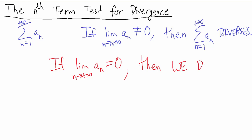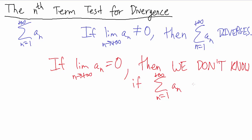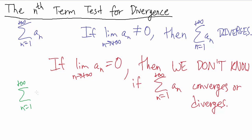Then we don't know if the sum from n equals 1 to positive infinity of a sub n converges or diverges. For some quick examples, let's take a look at the series: the sum from n equals 1 to positive infinity of 1 over n. This is called the harmonic series, and it's a very famous series where the limit of the sequence a sub n is 0, but the series itself actually diverges.